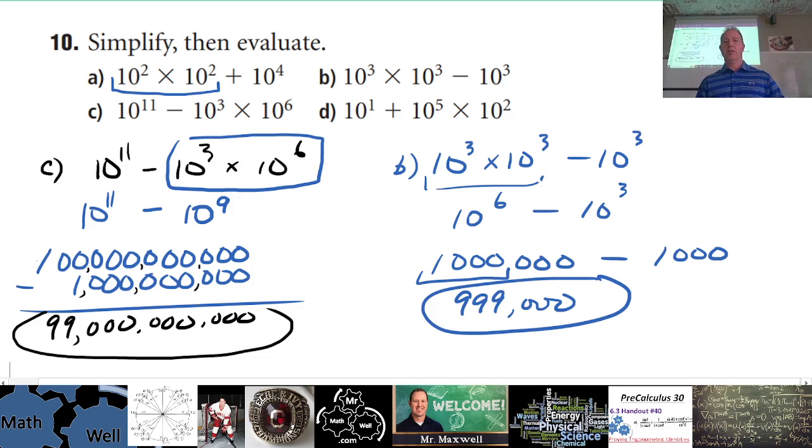Okay, and I'll let you do D by yourself now that you know that. So start with the multiplication here: 10^1 + 10^5 × 10².